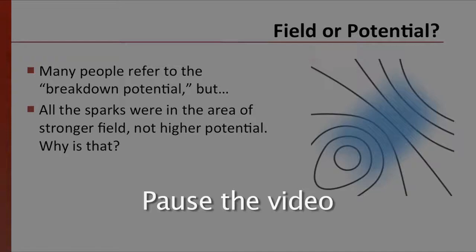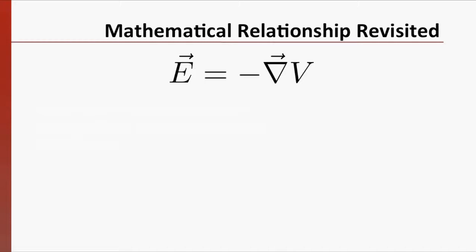If we return to the equations that relate the field and the potential, we can improve our understanding. You can see that we have a gradient term, a derivative with respect to distance. If our potential changes slowly over distance, the field is weak, and no spark is generated.